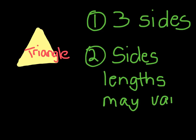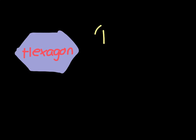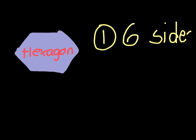Our last shape is going to be a hexagon. The hexagon has one main rule: it has six sides. So a shape with six sides would be called a hexagon.